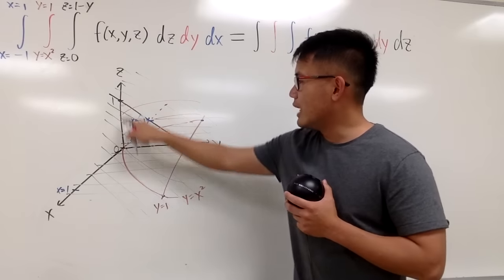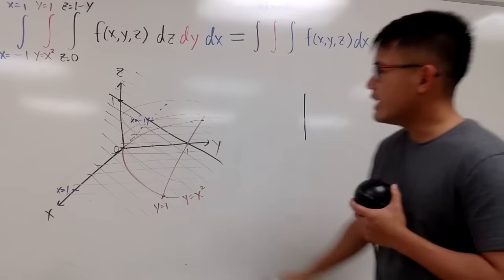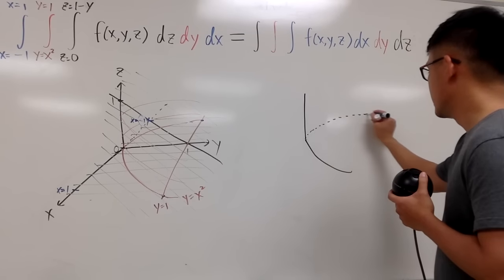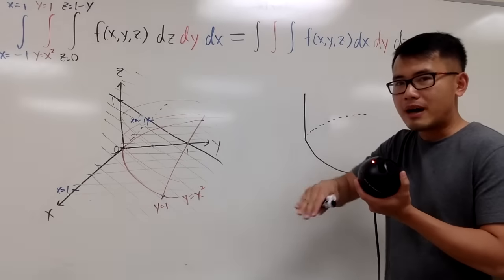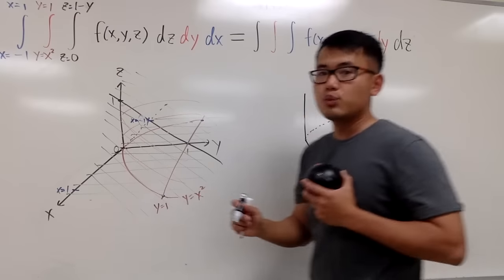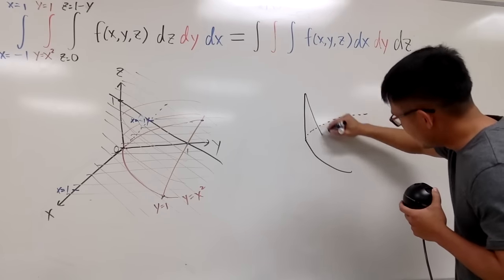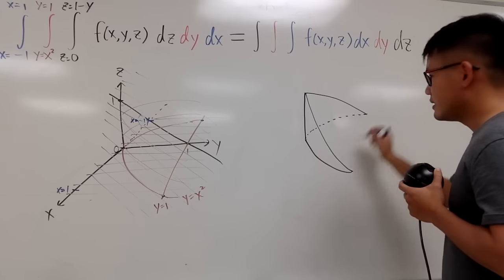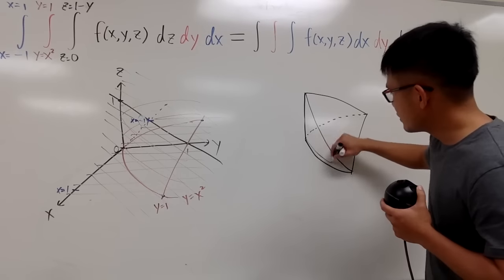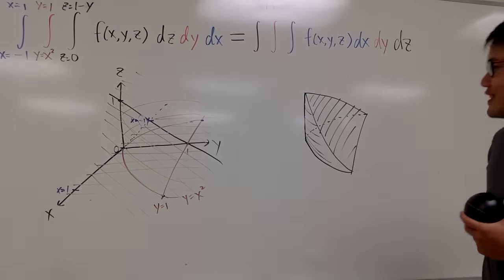Let me do a more legitimate 3D picture. The z-values go from 0 to 1 — that's the height of the solid. The base is this portion of the parabola. In the back, it looks the same, but remember the top is not flat; it's slanted because of z equals 1 minus y. So you draw a parabola going this way and connect the dots. That gives us this slanted solid.